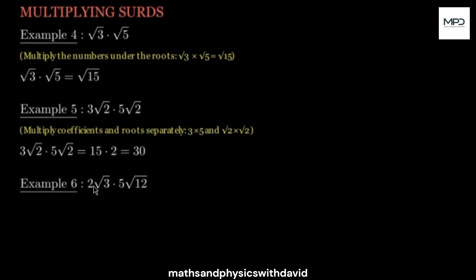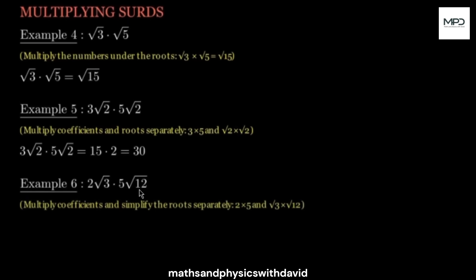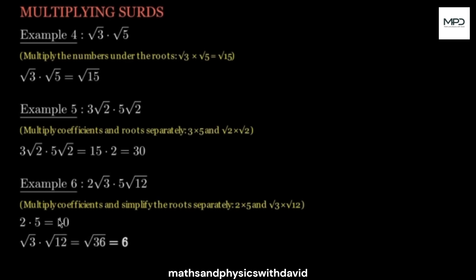In this example, all you have to do is 2 times 5, which is 10. Then square root of 3 times square root of 12, which gives you square root of 36. 2 times 5 is 10, and square root of 3 times square root of 12 gives you square root of 36, and the answer is 6. So you multiply your results together: 10 times 6, which is 60.